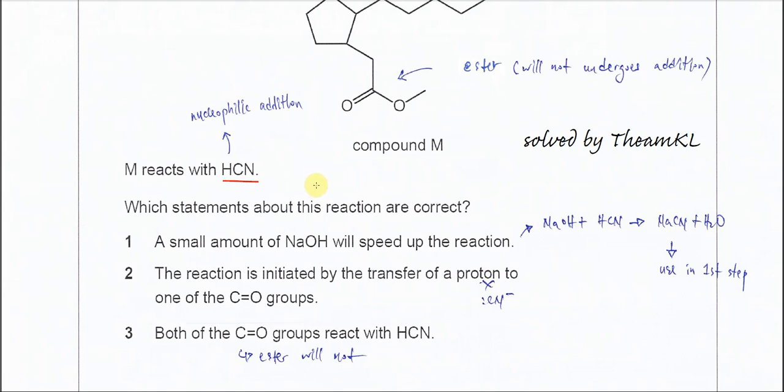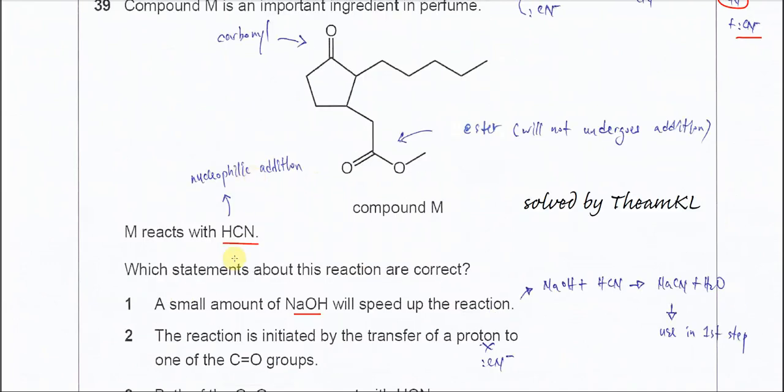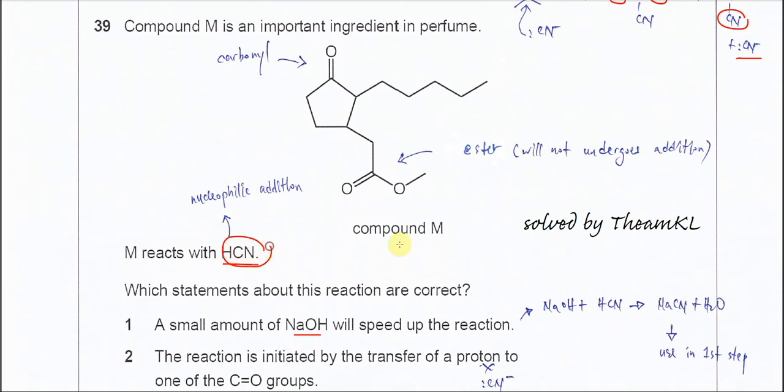Let's move on to the first statement: a small amount of sodium hydroxide will speed up the reaction. In this reaction with HCN and M, when we add sodium hydroxide, it will react with HCN to form sodium cyanide NaCN and the cyanide ion.